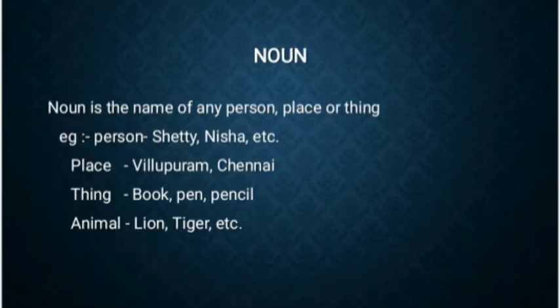First, we will see what is a noun. Noun is the name of any person, place, or thing. In short, it is a naming word. For example, the name of a person — Shetty, Nisha, etc. Name of a place — Villapuram, Chennai, Kadalur, and so on. Things like book, pen, pencil, eraser, pencil box, bag, and so on. Animals like lion, tiger, elephant, giraffe, buffalo, etc. So it could be the name of any person, place, thing, or animal.